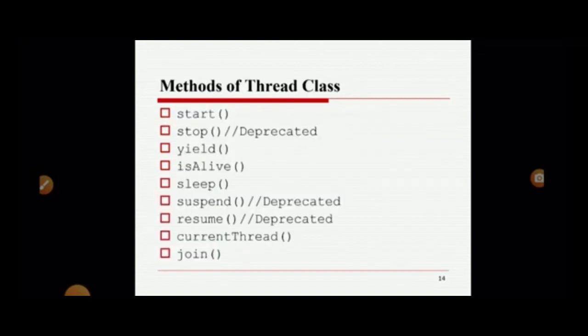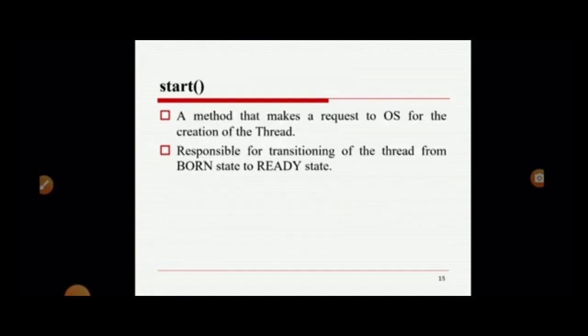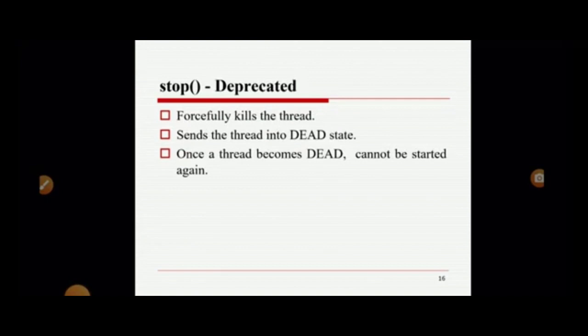Next, we are going to discuss some of the methods in the Thread class: start(), stop(), yield(), isAlive(), sleep(), suspend(), resume(), currentThread(), and join(). The start() method makes a request to the OS for the creation of a thread and is responsible for transitioning a thread from the born state to the ready state. The stop() method forcefully kills the thread, avoids a normal ending of the thread, and sends the thread to the dead state. Once a thread becomes dead, it cannot be started again.